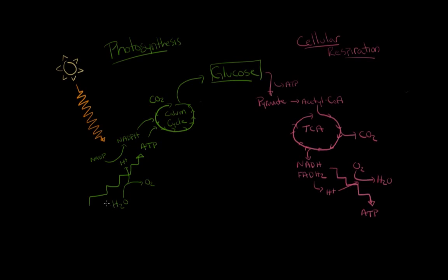In photosynthesis, our reactants are H2O and CO2, and our products are oxygen and glucose. Whereas in cellular respiration, we have glucose as a reactant, as well as oxygen, and we're now producing CO2 and water.